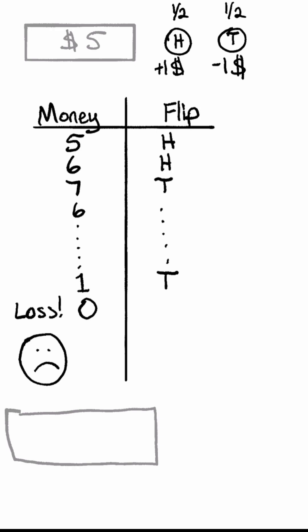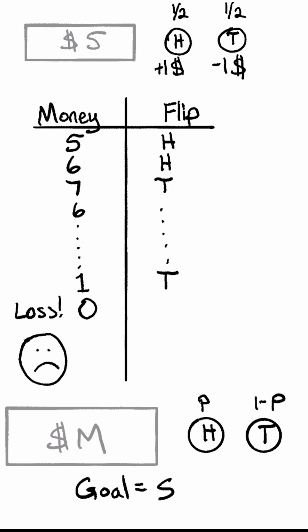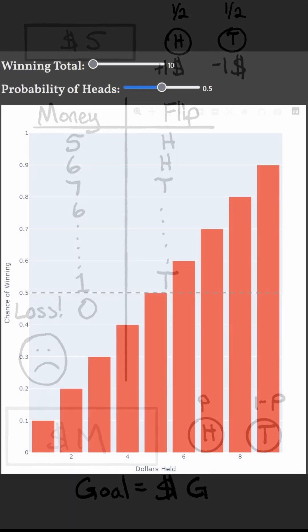It might be obvious that the chance of winning is 50% with a fair coin, but we could also imagine changing the starting amount, goal value, and bias of the coin, and then the solution isn't as clear. With proper techniques however, all of these cases are equally easy to solve.